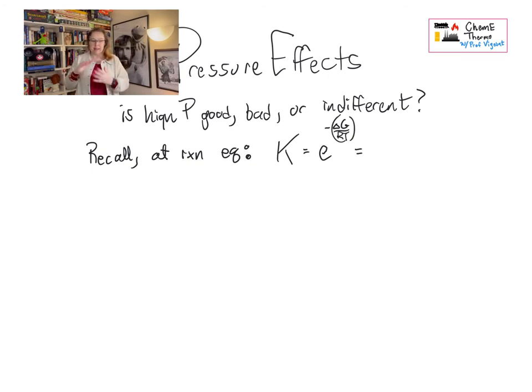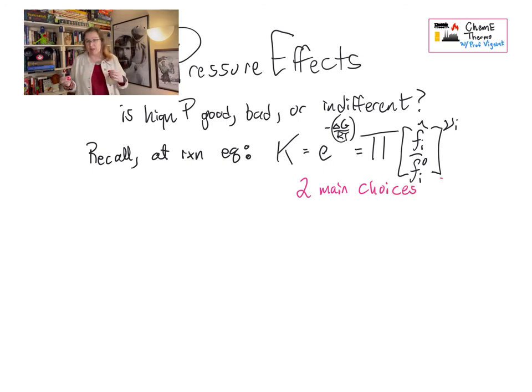And then that is equal to the product of all of the fugacities in the mixture divided by the standard state fugacities raised to the power of their stoichiometric coefficients. And that's how we look at it often when we're thinking about it in the first place. And then if it's a liquid, we usually sub in activities there. And when it's a vapor, we often look at it in terms of ideal gas, if we can assume that.